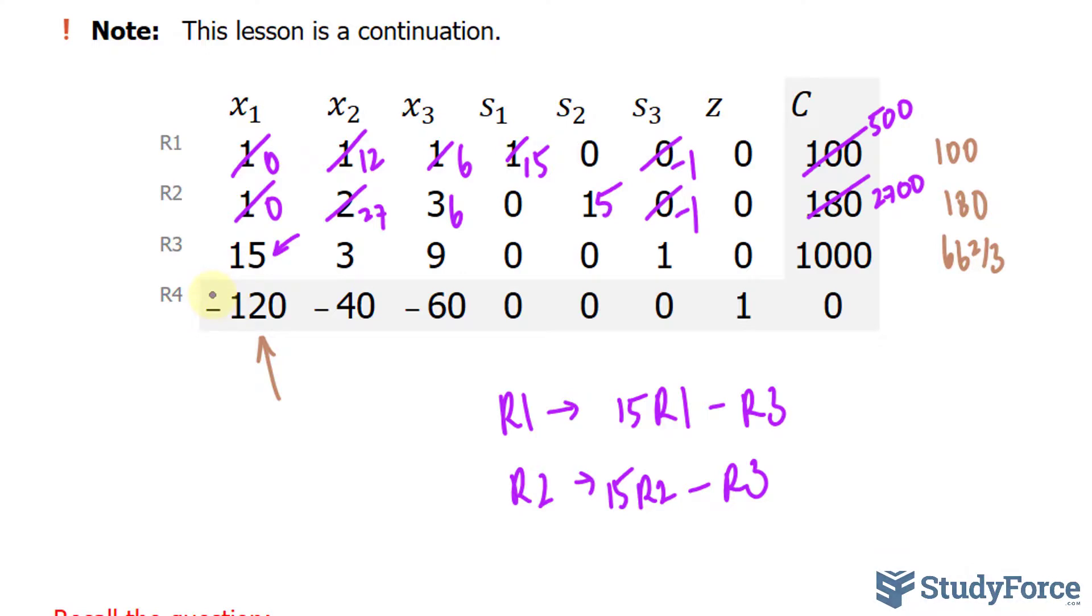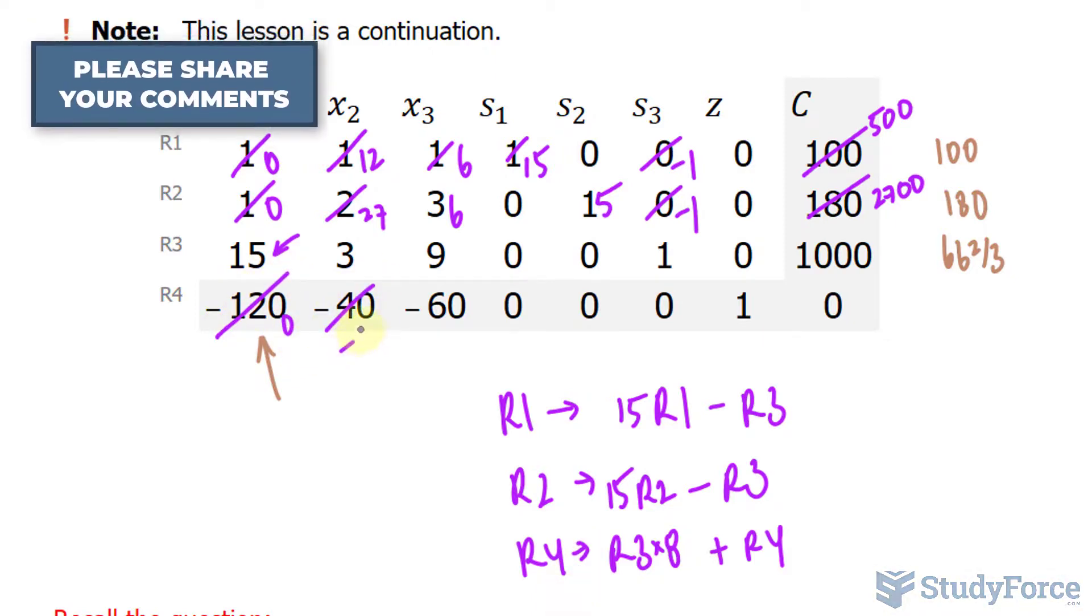For this last row, I'll multiply all of row 3 by a factor of 8. And I'll add what I get to row 4.